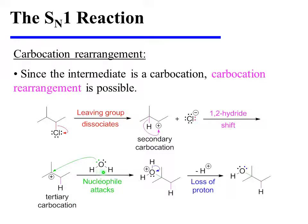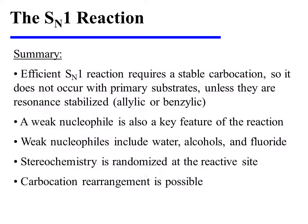The weak nucleophile, water, then attacks this center, yielding an oxonium ion. The oxonium ion sheds a proton, yielding the final product, which is an alcohol in this case.